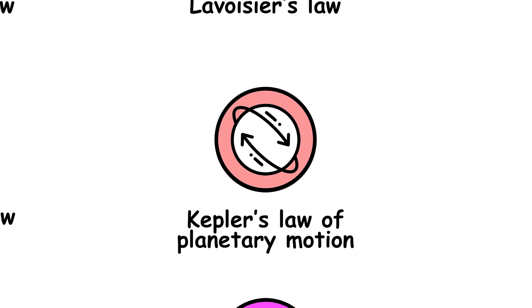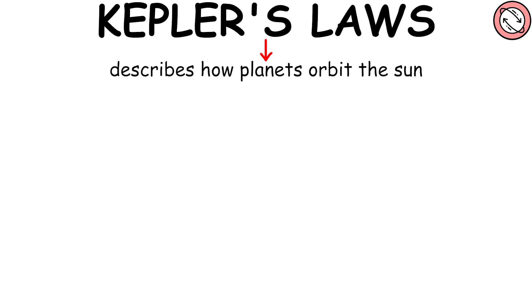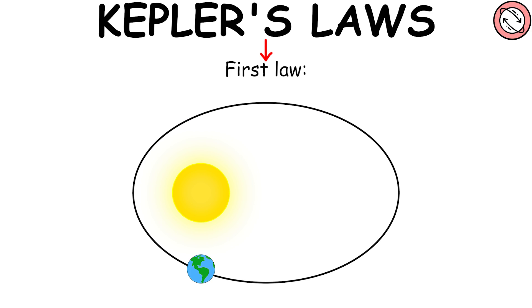Kepler's Laws of Planetary Motion describe how planets orbit the sun. The first law states that all planets orbit the sun in elliptical paths with the sun located at one of the foci.